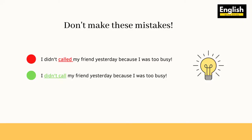Let's take a look at this sentence: 'I didn't call my friend yesterday because I was too busy.' What's the problem with that? When you use 'didn't,' you don't need to take that verb to the past tense. So the correct form will be: 'I didn't call my friend yesterday because I was too busy.'